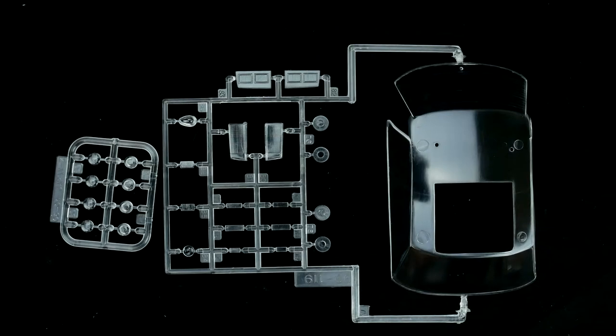Now take a look at the clear parts trees. So you have the main parts tree and a secondary parts tree with headlight and taillight lenses.